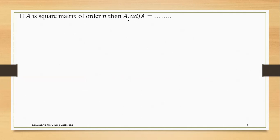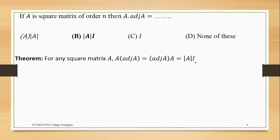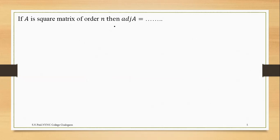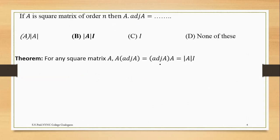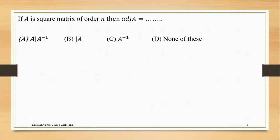Now the next question: if A is a square matrix of order n, then A into adjoint of A. This is the theorem — A into adjoint of A is equal to determinant times the identity matrix. From this, adjoint of A equals A inverse times determinant, or equivalently, determinant of A times A inverse.